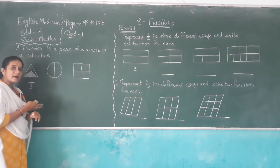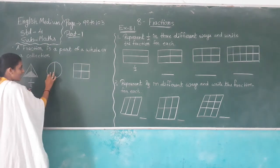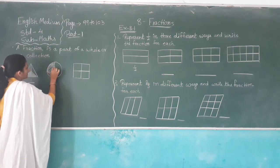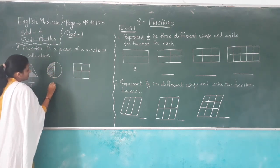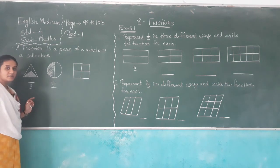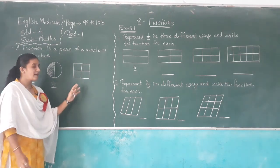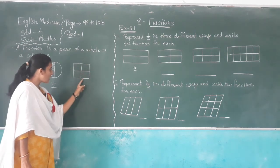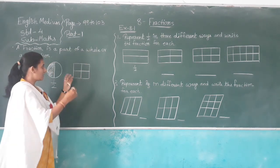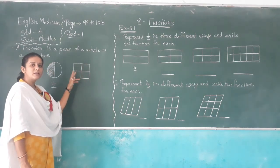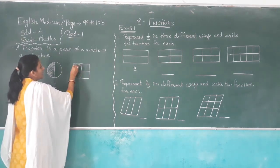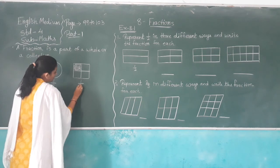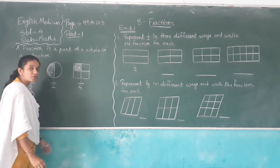This circle is divided into two parts — one part and two parts. One is shaded, so it is called one half. Here, a square is divided into four parts. One square means whole, divided into four parts. That means this is called a fraction. One part is shaded, so it is one fourth.